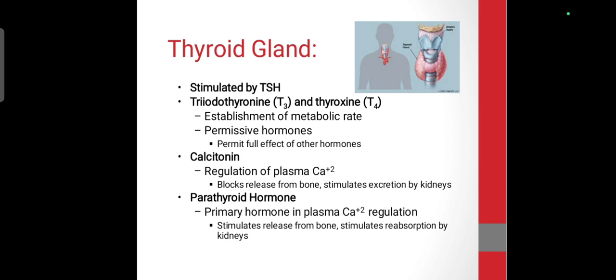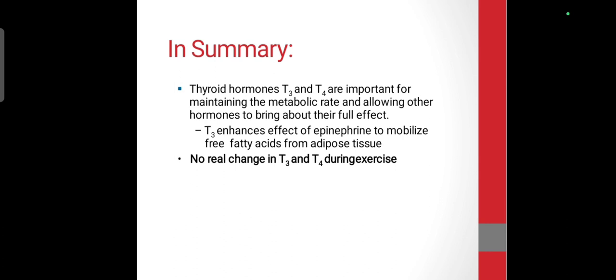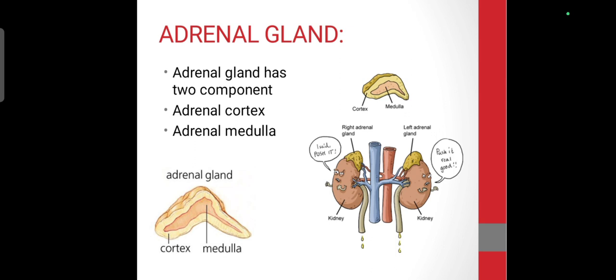Regarding the thyroid gland: TSH stimulates the thyroid gland. Calcitonin helps regulate calcium release. T3 and T4 help maintain metabolic rate and free fatty acid mobilization. There are no real changes in T3 and T4 during exercise, but when people exercise regularly, thyroid function is automatically balanced.